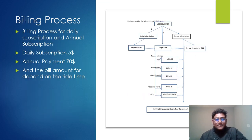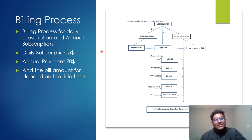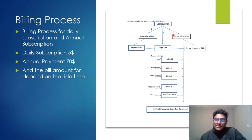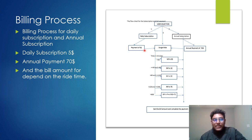The billing process covers daily and annual subscriptions. The daily subscription is $5 and the annual subscription is $70. The bill amount depends on ride time. This flowchart shows the user selection for billing: daily subscription requires a payment of $5, and annual subscription requires a payment of $70. User selection for a single ride also costs $5.